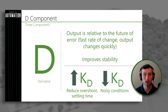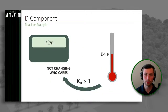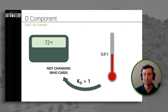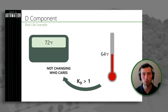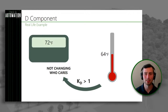Let's look at our thermostat example. It's set to 72, it's actually 64 in my house. You would think I'd want to turn on the heat, but the derivative component — since it's just looking at the rate of change — sees that we're consistently at 64. So it says: it's not changing, I don't care. That's how the D component thinks.